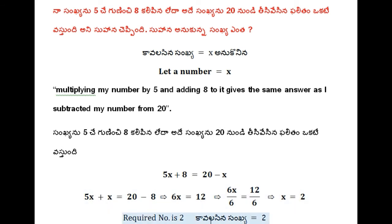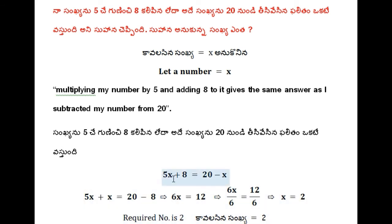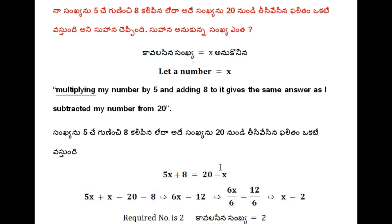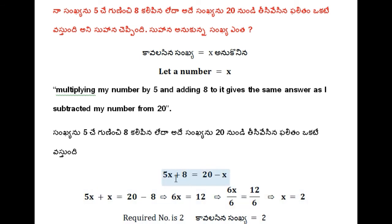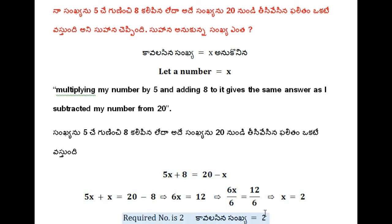So the required number is 2. Let us verify whether our answer is correct or not. 5 times 2 is 10, and 10 plus 8 gives us 18. Also 20 minus 2 is also 18. Both sides are equal, so the answer is verified.